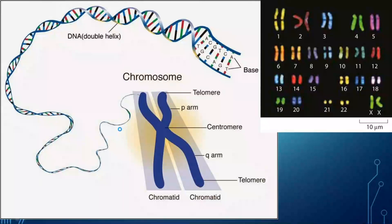I would request you to have a look at this diagram — it shows 22 pairs plus one pair of sex chromosomes, totaling 23 pairs of chromosomes. This is called a karyotype. When the total number of chromosomes of any organism is represented with the help of a diagram, that is called the karyotype. This is the karyotype of a human cell — each human cell consists of 46 chromosomes, and you can see their lengths and sizes. The 23rd pair of chromosomes is called the sex chromosome.